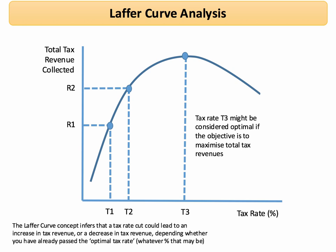Tax rate t3 is at the peak of the Laffer curve, and this might be considered the optimal tax rate — and this is a key point — if the objective is to maximize total tax revenue.